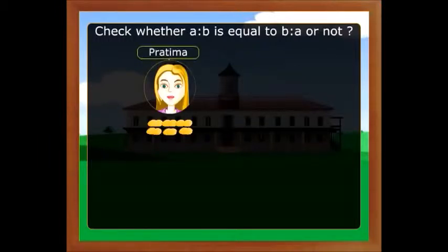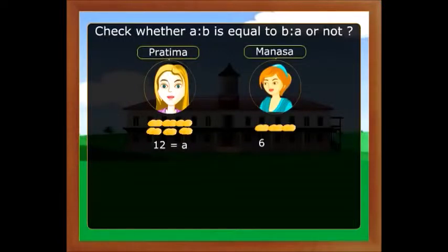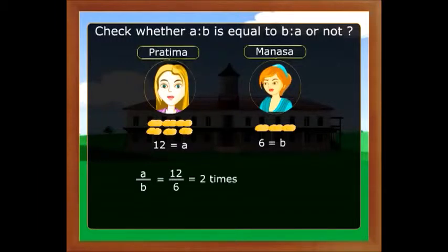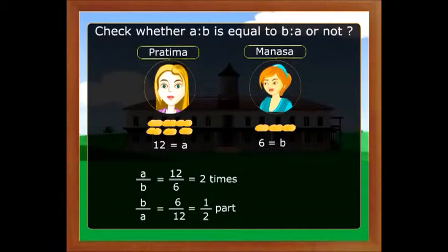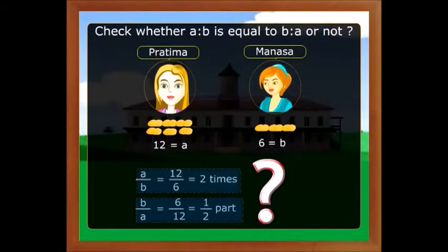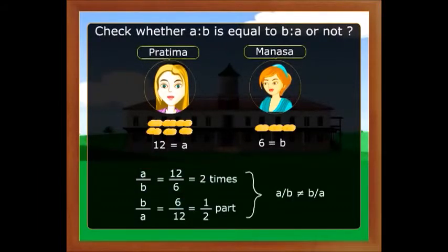Let the number of mangoes with Pratima be 12, equal to A, and the number of mangoes with Manasa be 6, equal to B. So A by B is equal to 12 by 6, which is 2. Now B by A is equal to 6 by 12, which is equal to one half.